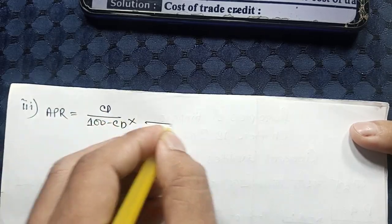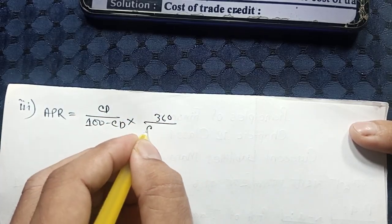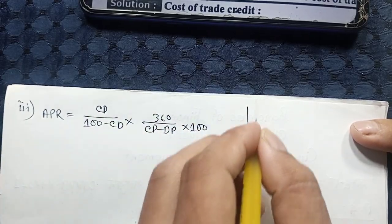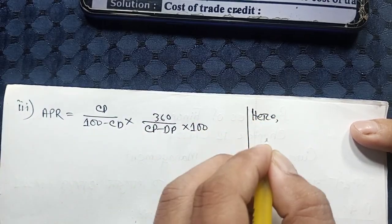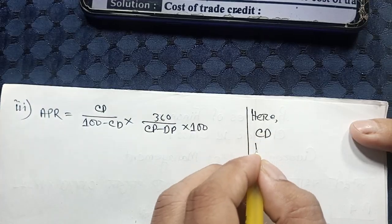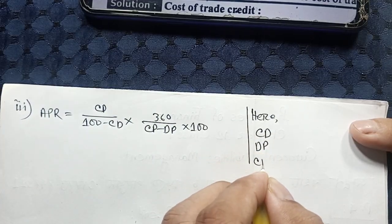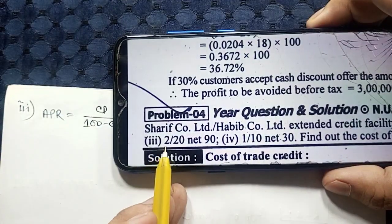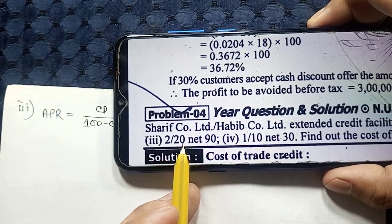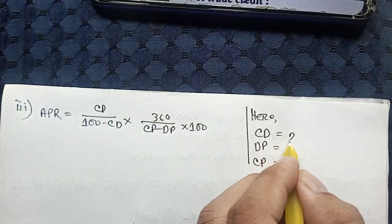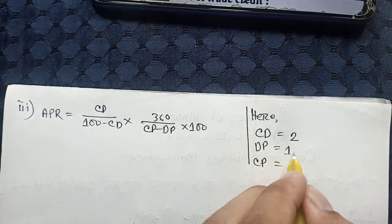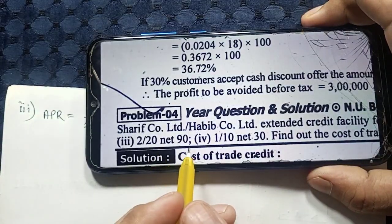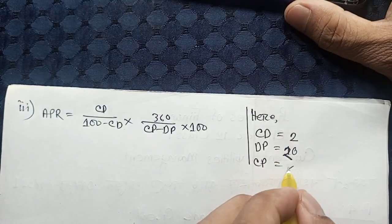The result is approximately 14%. This is 10 days per term. Credit discount is 2%, discount period is 10 days — sorry, 20 days — net 90. That is 3 months, or 90 days.